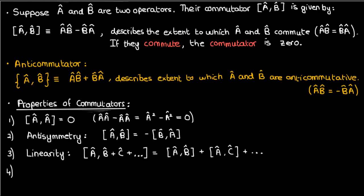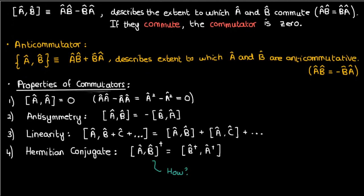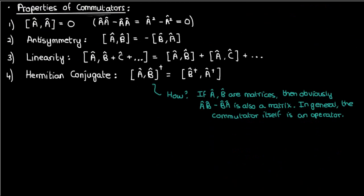The fourth property is that the Hermitian conjugate of a commutator involving a-hat and b-hat is the commutator of the Hermitian conjugates of b-hat and a-hat. You might wonder how you can even take the Hermitian conjugate of a commutator — well, if you think of a-hat and b-hat as matrices, which is one way of expressing operators, then multiplying two matrices and subtracting gives a-hat b-hat minus b-hat a-hat, which is also a matrix. So in general the commutator of two operators is itself an operator, which is why it makes sense to take its Hermitian conjugate.